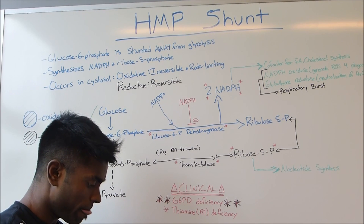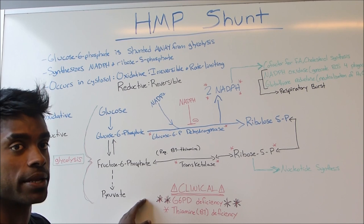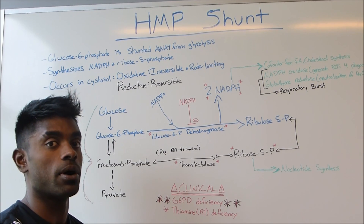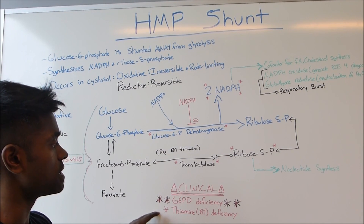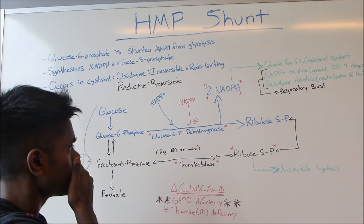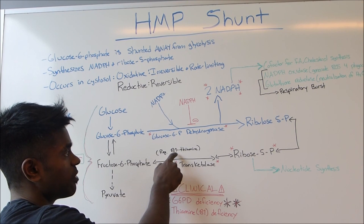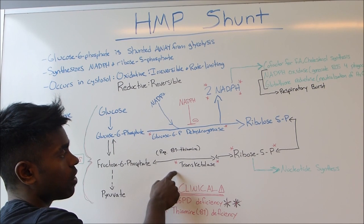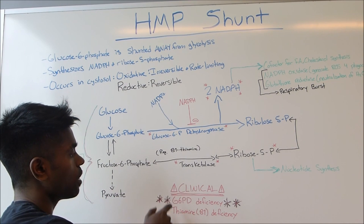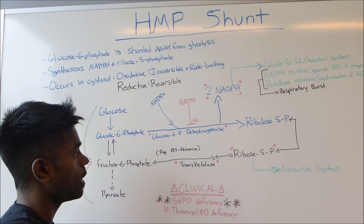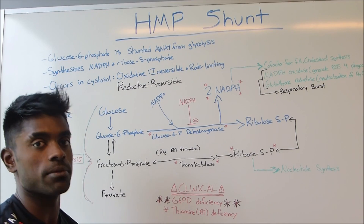G6PD deficiency is X-linked, so it mostly affects males. On slides, G6PD deficiency can be seen as Heinz bodies or bite cells. The next condition to discuss is thiamine (vitamin B1) deficiency. Transketolase depends on thiamine, and many alcoholics develop Wernicke-Korsakoff syndrome, which is caused by thiamine deficiency, so a lot of these patients who come in as alcoholics present with vitamin B1 deficiency.